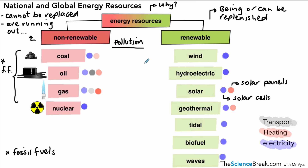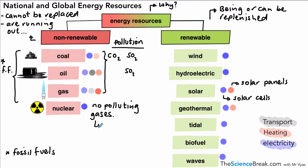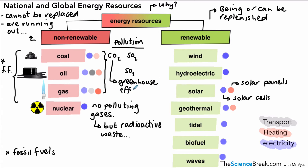There is an issue with pollution from non-renewable energy resources. The main one is carbon dioxide, which is released when we burn fossil fuels. We also have the release of sulfur dioxide when we burn coal and oil, which contributes to acid rain. Nuclear energy has the advantage that no polluting gases are produced, but we do have radioactive waste that must be disposed of very carefully. Carbon dioxide also contributes to the greenhouse effect, which leads to global warming and climate change.